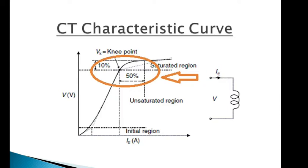In 5P20 CT, the CT is able to operate properly up to 20 times its rated value, and 5P is the CT accuracy class.